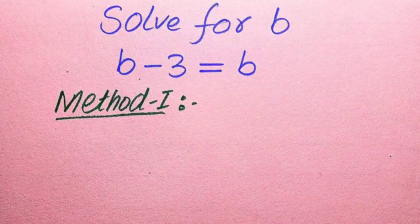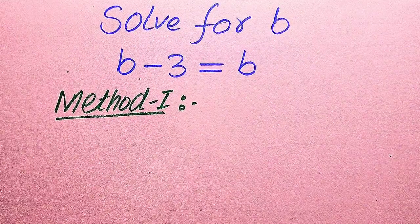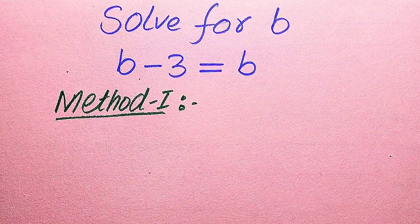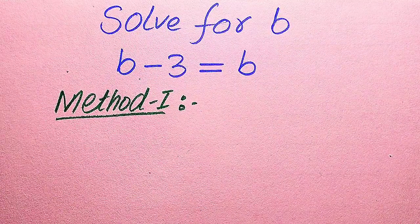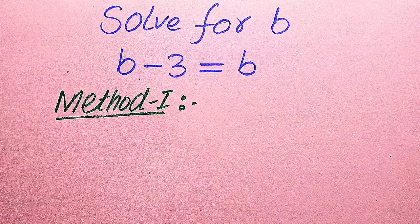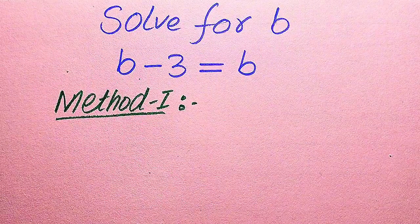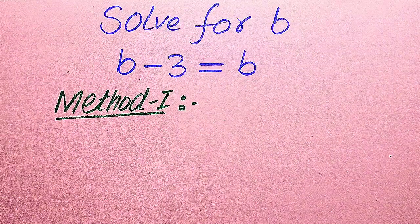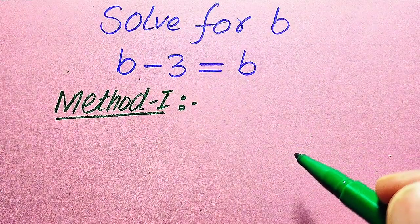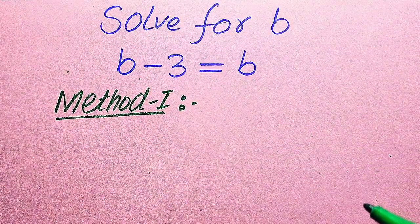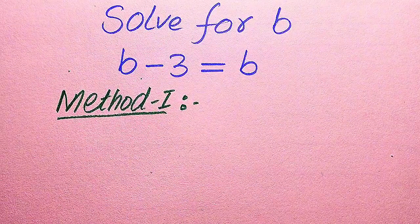Hello everyone. How to solve this problem for the values of b, if we have √(b − 3) = b? We solve this problem for all the values of b. First we need to find all the roots of this equation, and at the last we will verify which of the roots are solutions and which of the roots are extraneous roots.